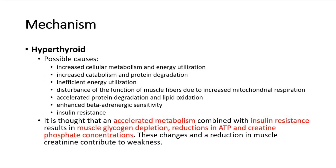Let's look at the different mechanisms for different causes of proximal myopathy. In hyperthyroidism, the possible causes of proximal myopathy are increased cellular metabolism and energy utilization, increased catabolism and protein degradation, inefficient energy utilization, disturbance of the function of muscle fibers due to increased mitochondrial respiration, accelerated protein degradation and lipid oxidation, enhanced beta-adrenergic sensitivity, or insulin resistance.